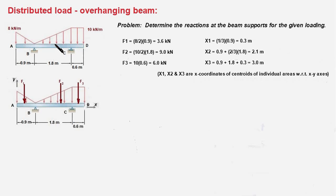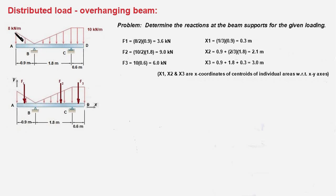There are three distinct areas of the distributed load. The first is a triangle, and the area under the load curve is 8 kilonewtons per meter times the distance AB (0.9 meters) divided by 2, which gives 3.6 kilonewtons. This distributed load is replaced by a single force F1 of 3.6 kN. Its line of action is at the centroid — one-third from the base, so 0.3 meters. Thus x1 = 0.3 meters from point A.